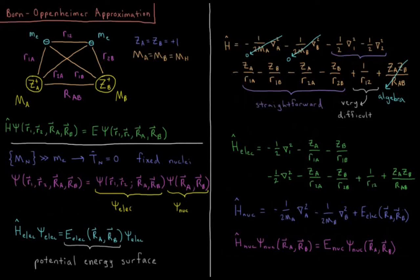This video discusses the Born-Oppenheimer approximation applied to the H2 molecule. We start with our hydrogen molecule model: two nuclei, nucleus A and nucleus B, each with a charge of plus one and a mass equal to the mass of a proton. We also have two electrons of charge minus e and mass m_e.